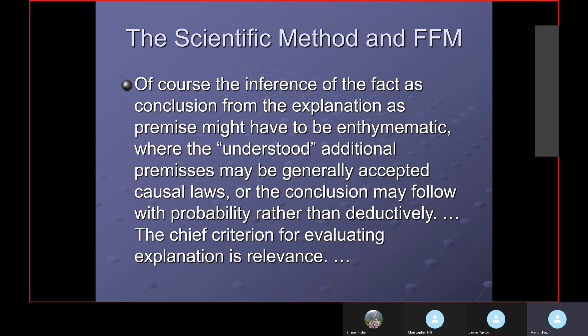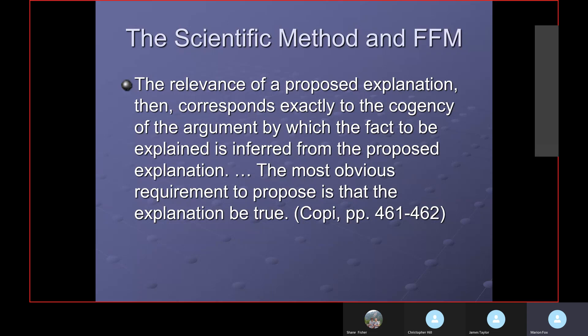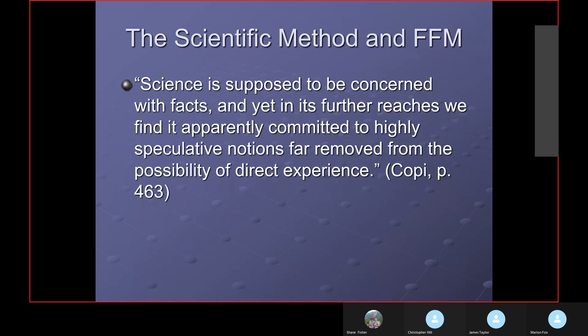The chief criterion for evaluating an explanation is relevance. The relevance of a proposed explanation corresponds exactly to the cogency of the argument from which the fact to be explained is inferred. The most obvious requirement is that the explanation be true — that's almost axiomatic. Copi goes on to describe science as supposed to be concerned with facts, yet in its further reaches it is apparently committed to highly speculative notions, moving from the possibility to direct evidence and experience.